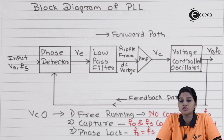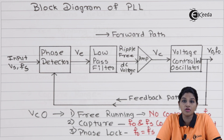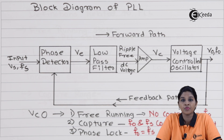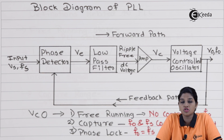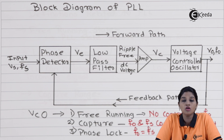So this is the working principle of PLL — a control system which generates the output signal that is phase-related with respect to the input signal. Once the PLL is phase locked, the output and input frequency vary with respect to each other. I hope you understood the topic of introduction and working principle of phase lock loop. Thank you very much for watching this video. Stay tuned to Ikeda. Subscribe Ikeda. Thank you.